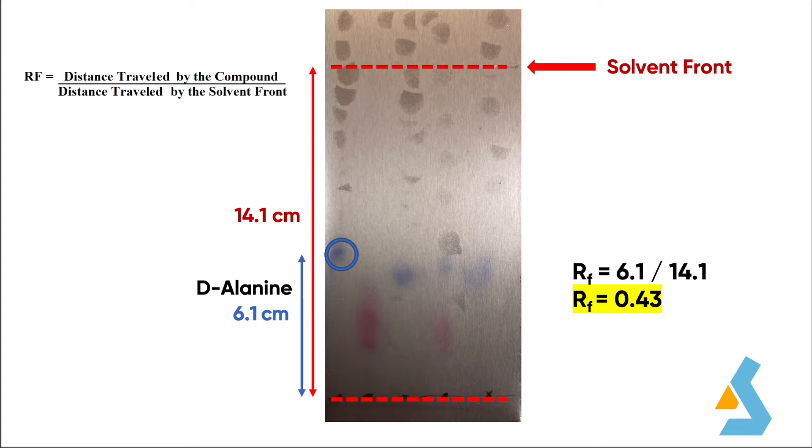Then, we calculated the retention factor for this D-alanine. When we divided 6.1 by 14.1, we found the retention factor for D-alanine as 0.43.